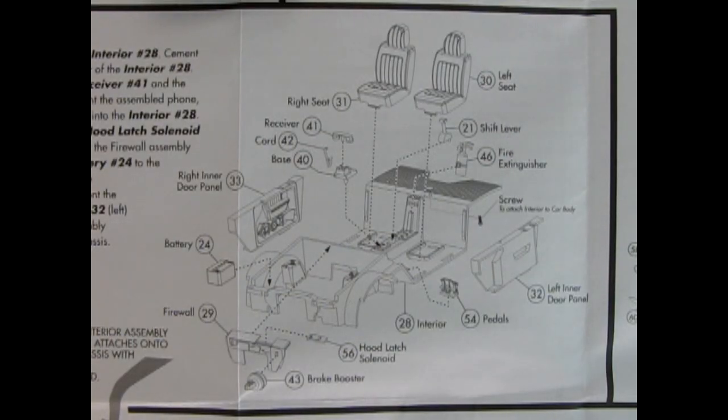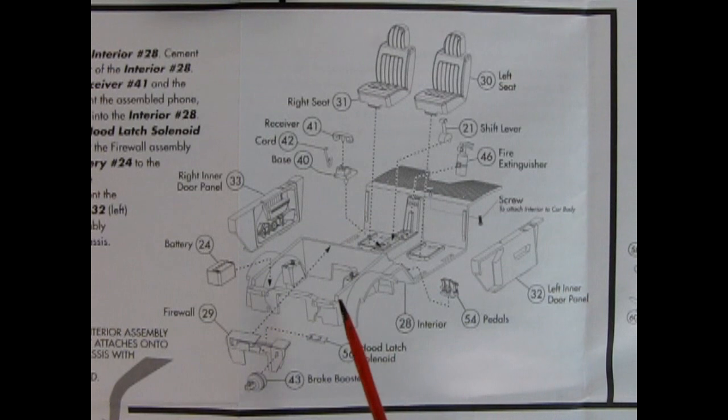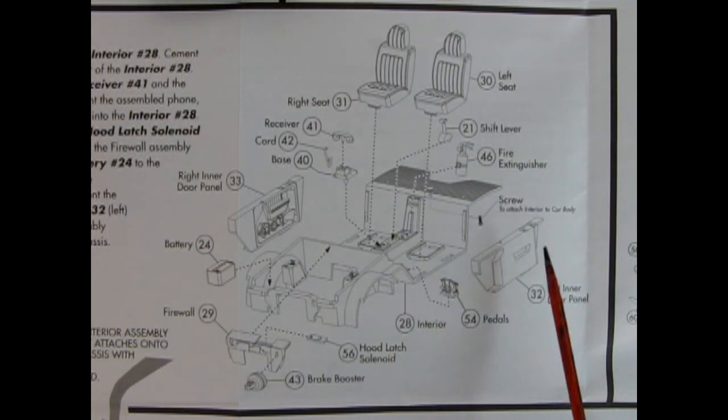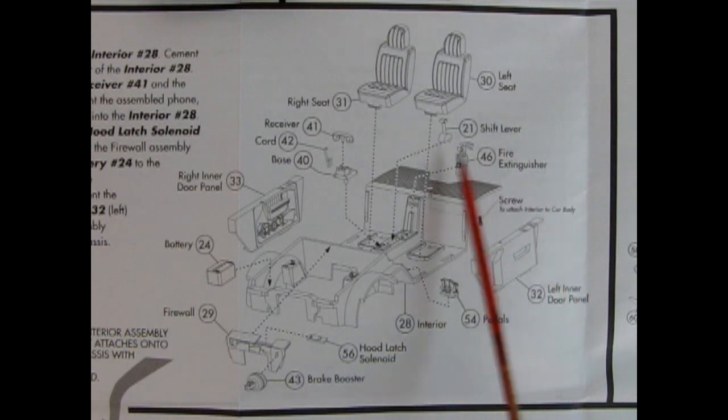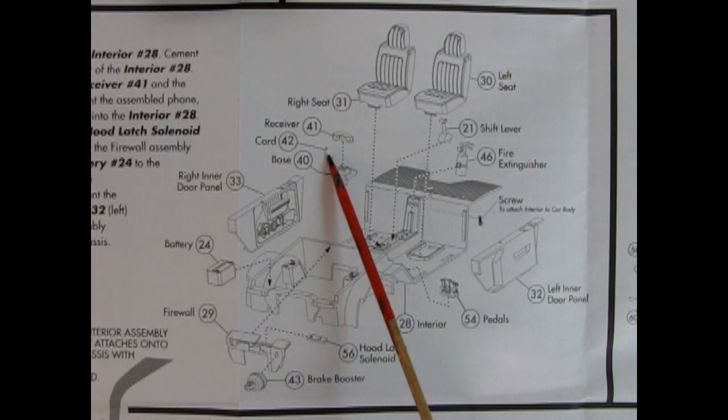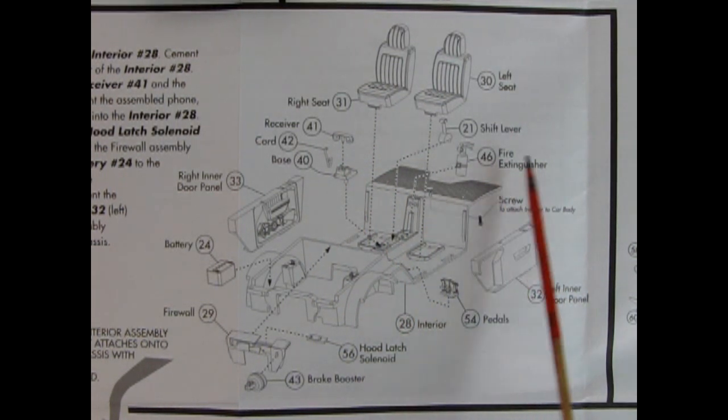Next up we have our interior going together, as well as the chassis pan. So here you can see quite an elaborate chassis pan, which also includes the inner fender aprons and all of that kind of great stuff. So you drop in the battery. You've got the firewall, the hood latch solenoid, the brake booster down here, right and left inner door panels, pedals, fire extinguisher, shift lever, left seat, right seat, receiver, a cord and a base for the bat phone. And that looks all great.